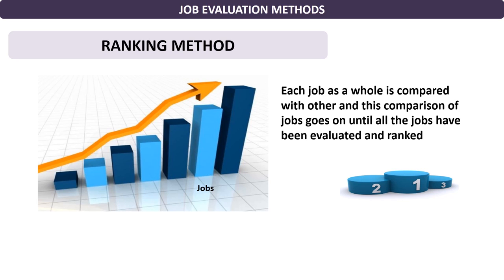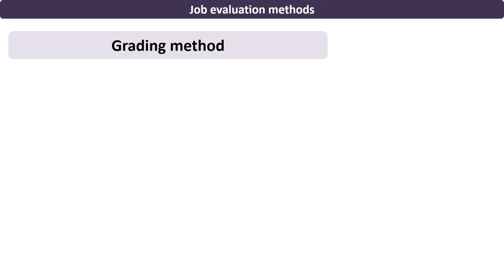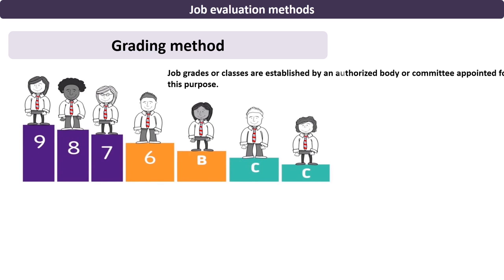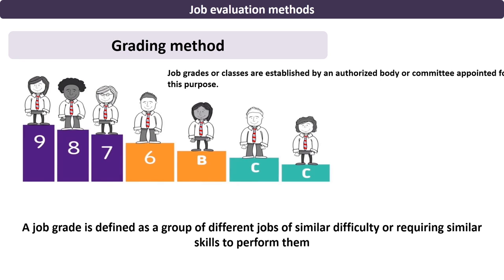Another non-quantitative method is the grading method. Under this method, job grades or classes are established by an authorized body or committee appointed for this purpose. A job grade is defined as a group of different jobs of similar difficulty or requiring similar skills to perform them. Job grades are determined on the basis of information derived from job analysis.